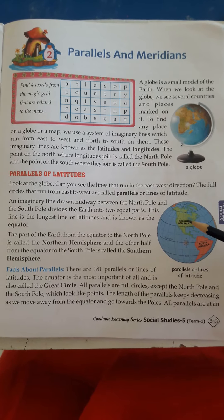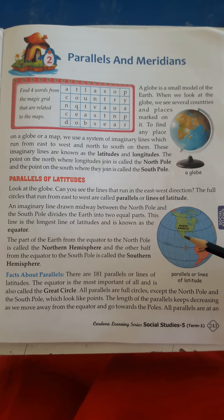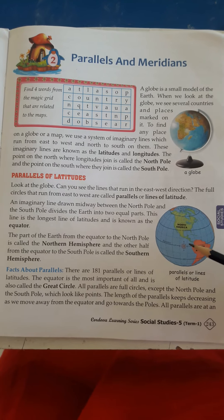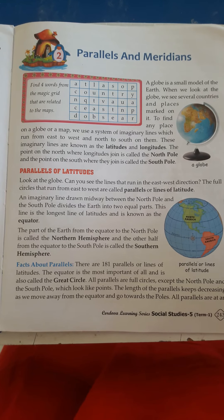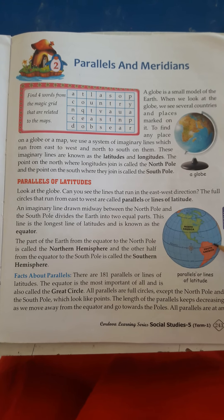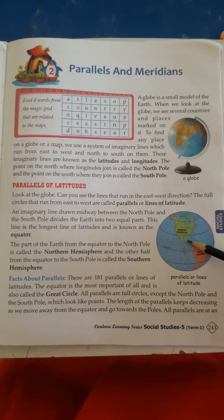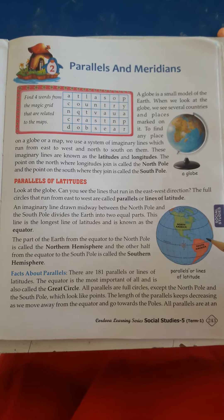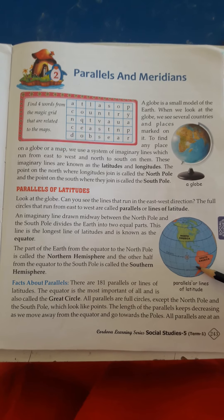The imaginary lines that pass from the north pole and south pole divide the earth into two equal parts. The longest line of latitude is known as the equator. The line that is passing from the center is known as the equator, which is also the longest line of latitude, and at the same time it divides the earth into two equal parts. This line that you see on this globe is known as the equator.